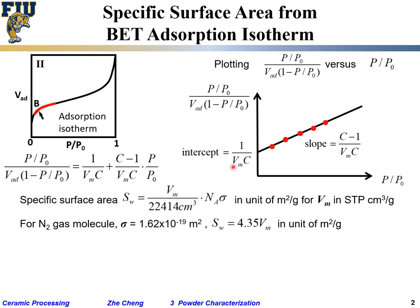With two unknowns (Vm and C) and two equations from the slope and intercept, we can mathematically solve for both Vm and the fitting constant C. Once Vm is known, we can calculate the specific surface area.